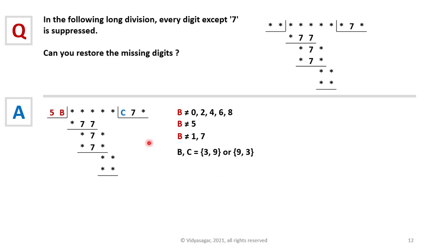Now we use multiplication with the second digit in the quotient, that is 7, to further solve this problem. So 5B times 7 is resulting in a three-digit number whose middle digit is 7.